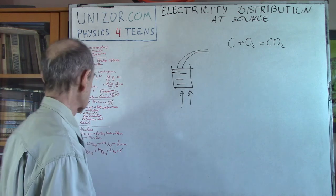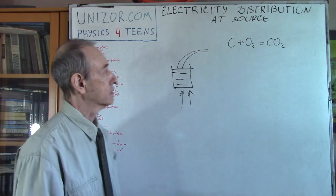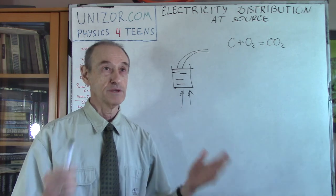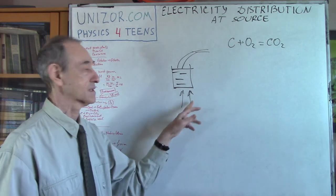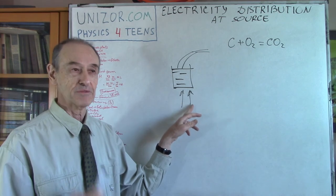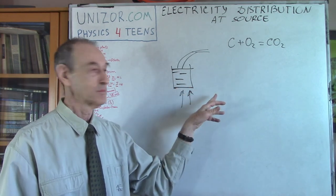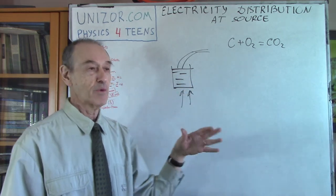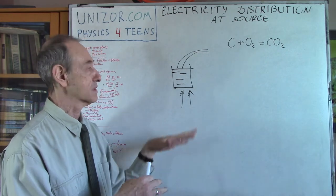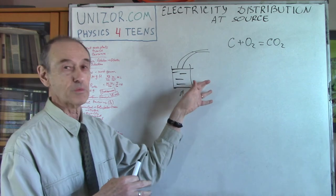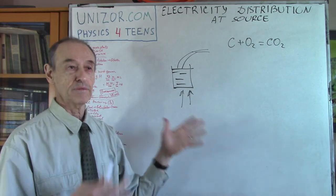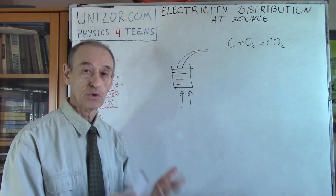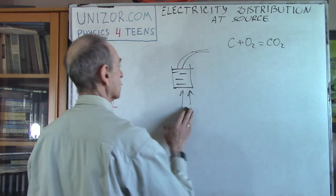The last type I want to discuss is nuclear power plants. Scientifically, it still uses exactly the same principle — heat boils water, water produces steam, steam goes to turbines. However, the difference between nuclear and coal burning is how the heat is made. In coal burning, it's the burning coal; in nuclear power stations, we have a nuclear reaction.